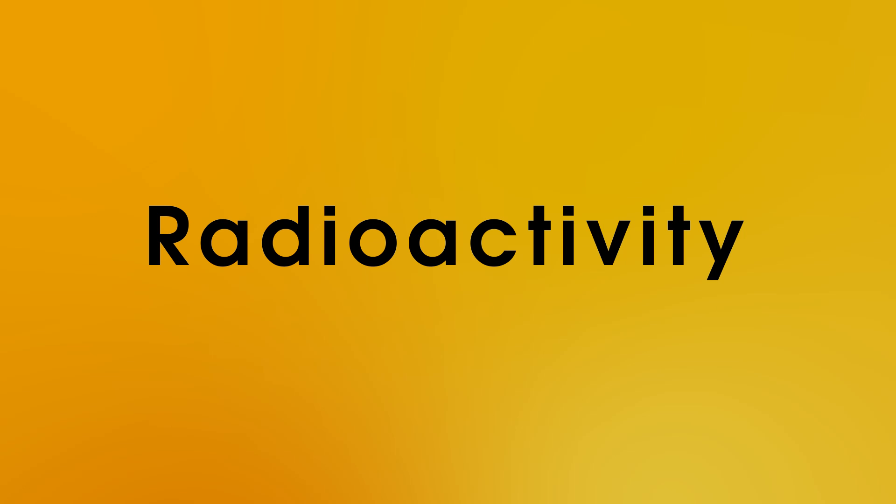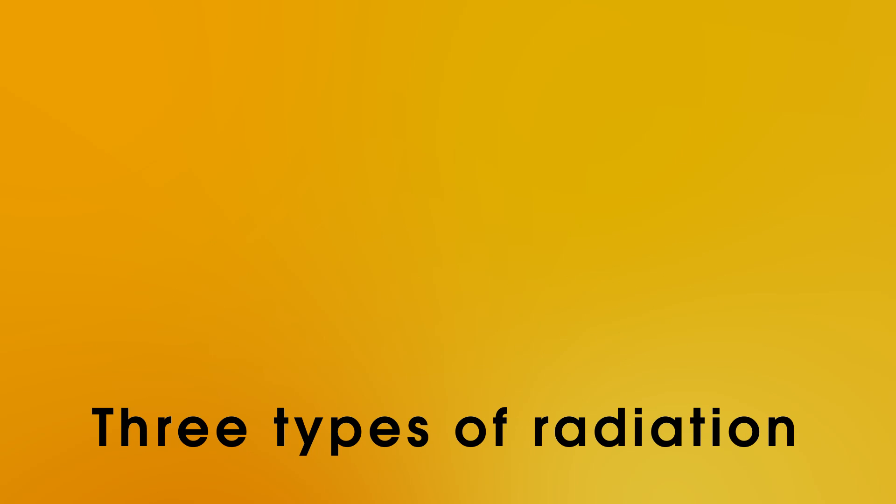Radioactivity. Some atomic nuclei are unstable and emit radiation. They are considered radioactive. Now there's only three types of radiation they can emit, and because scientists didn't really know exactly what they were when they discovered them, they named them after the first three letters in the Greek alphabet.